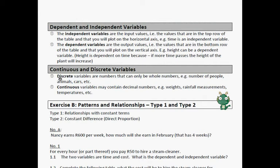And the next one, continuous and discrete. Discrete variables are numbers that can only be whole numbers, like number of people, number of animals, number of cars, etc. Continuous can contain a decimal, like weight, rainfall measurements, temperature, money. You can have 5 rand 72. So those will all be continuous. We did dependent and independent variables with the previous video as well. You could quickly just, I mentioned it. Okay, so then it's exercise B.